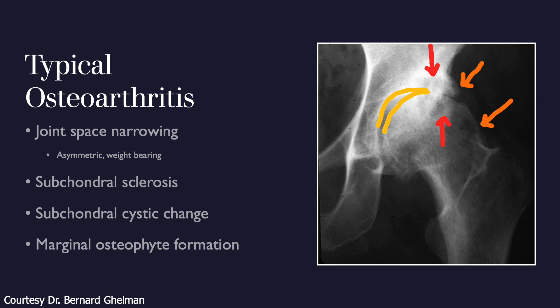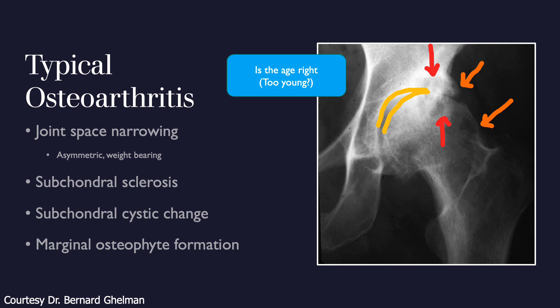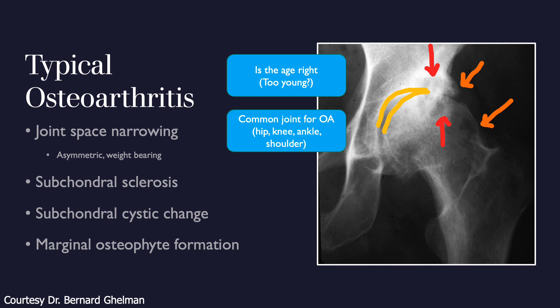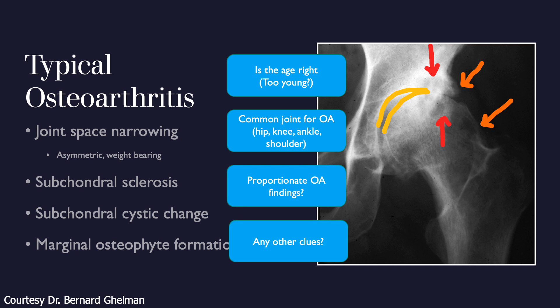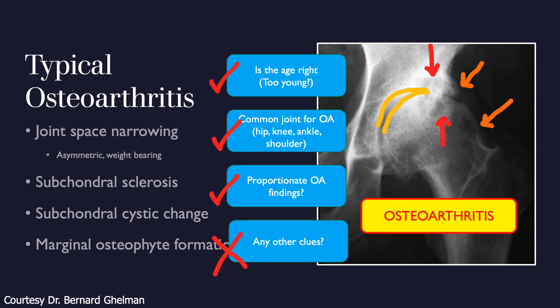Here we see asymmetric joint space narrowing, subchondral cystic changes and sclerosis, and marginal osteophytes including acetabular osteophytes and a ring osteophyte along the femoral head-neck junction. The age is appropriate, the hip is a common joint, the OA findings are proportionate, and there are no other clues — all indicators of typical primary osteoarthritis.